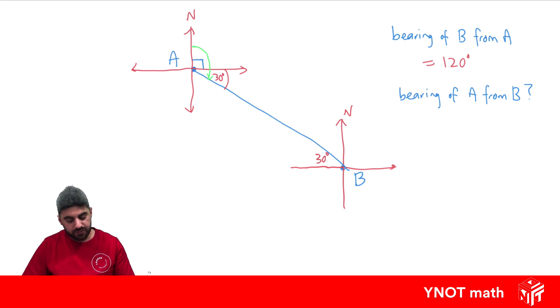When we measure the bearing of A from B, we have to be measuring at B. Start at the north line, go in a clockwise direction until we get to the line that joins the two points, and we need that entire angle. We know that's 90, 90 and 90, so we're already at 270. We just need another 30. So 270 plus 30 is going to be a bearing of 300 degrees, A from B.